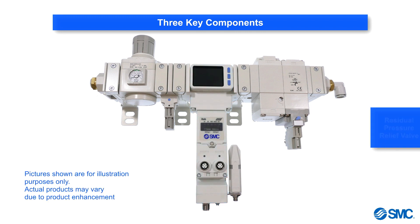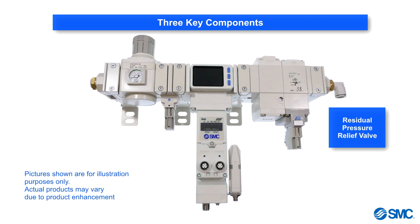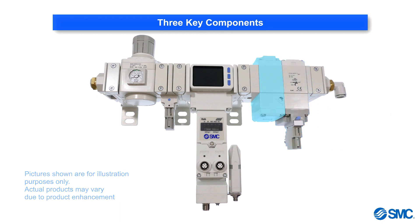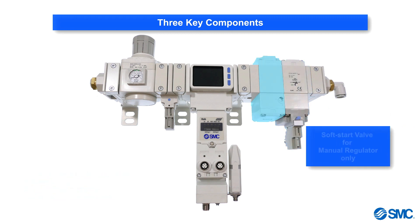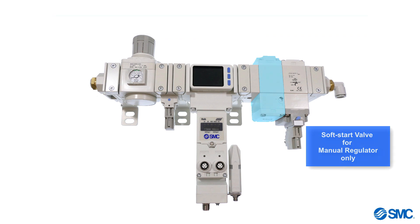The final component is the residual pressure relief valve. This is used to isolate and vent the air supply downstream of the system. A soft start valve is connected to this only when a manual regulator is used.